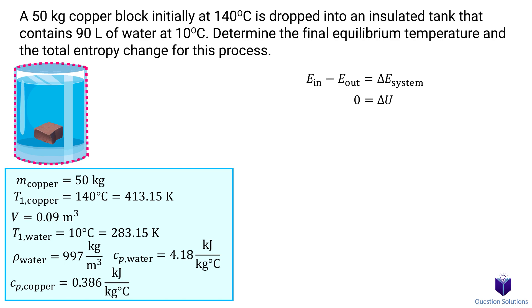But on the right side, there is internal energy change. There are two parts to this internal energy change, the change in the water and the change in the copper block. So we can write that like this. We can go further and write our internal energy as a product of mass times specific heat times the change in temperature.